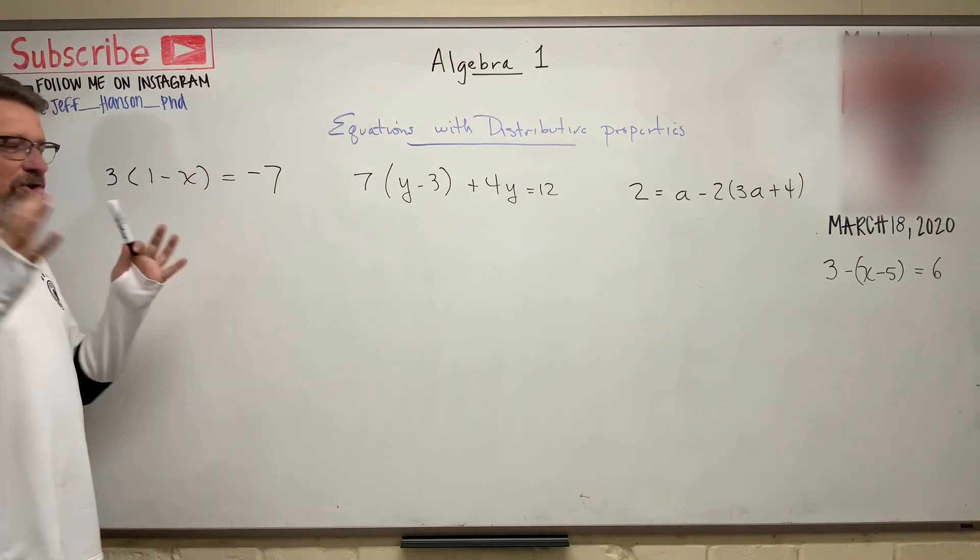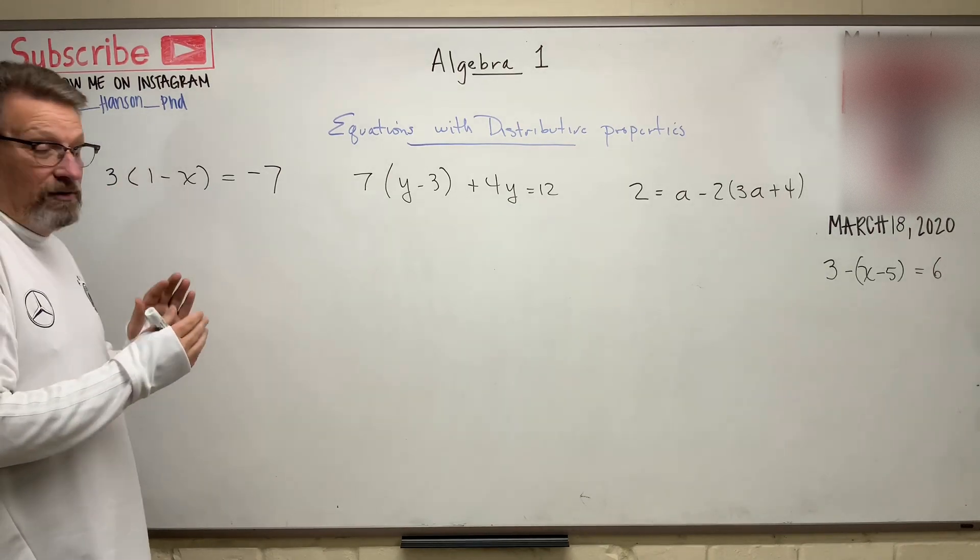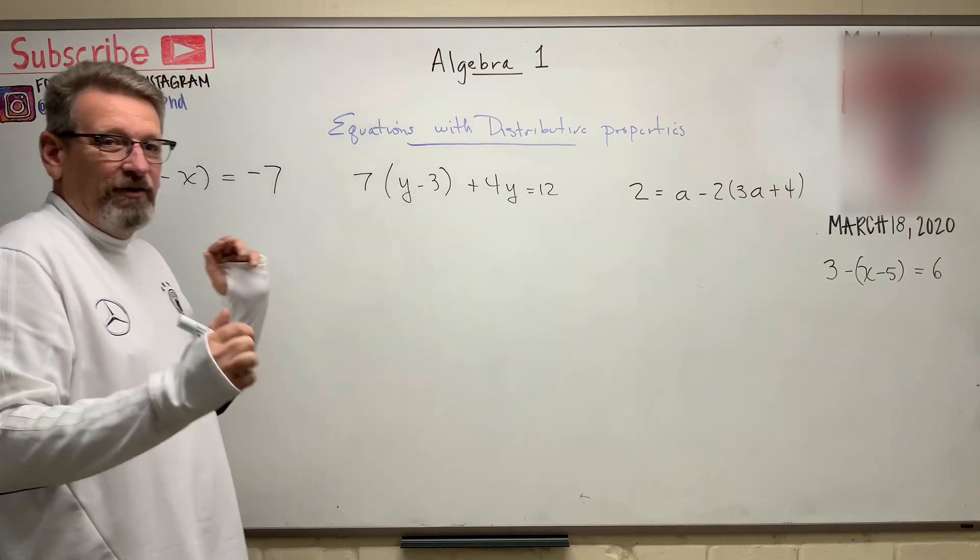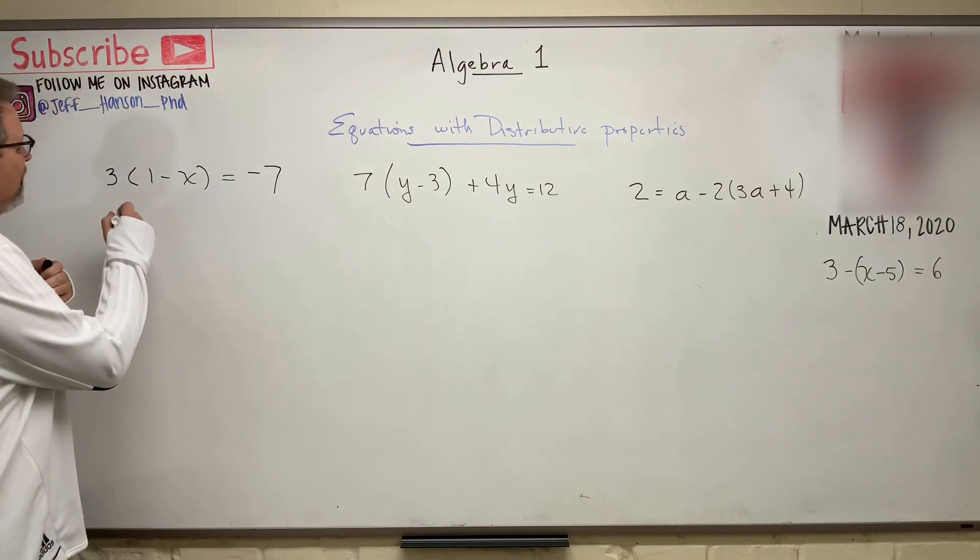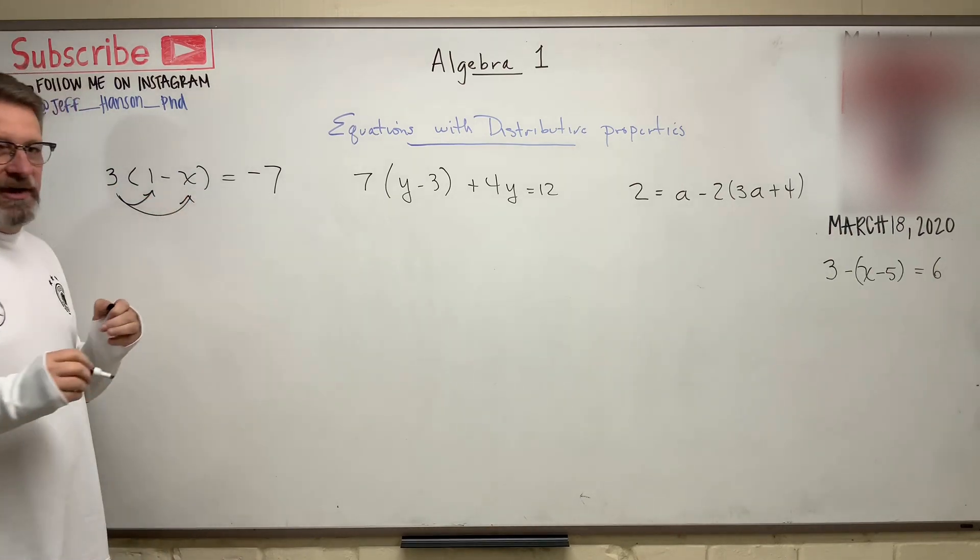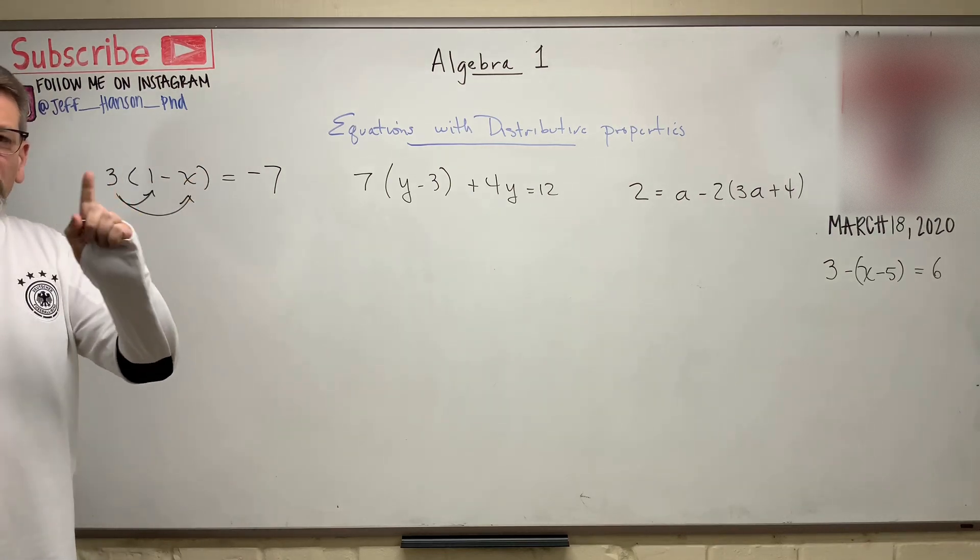So remember, distributive property means if I multiply one thing times something else, or even if I add, whatever I have in front of the parentheses has to distribute to everything in the parentheses. So the 3 is going to be multiplied by this guy and by that guy. So first step, expand those parentheses. Remember our PEMDAS, parentheses, that's the first thing you want to address.